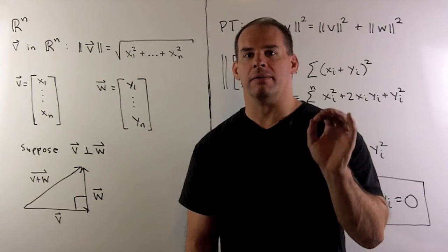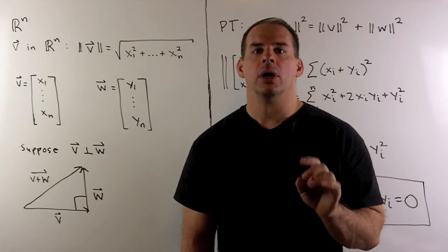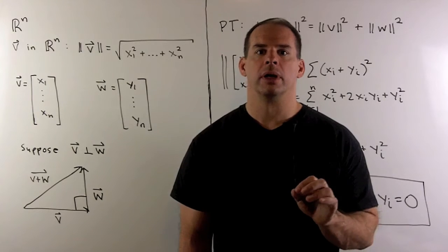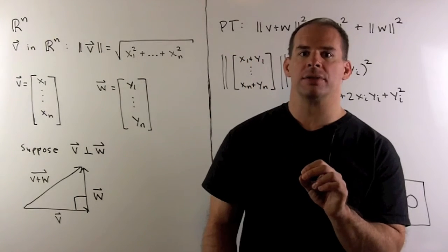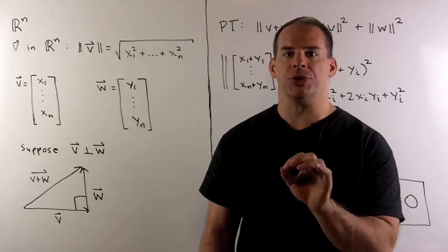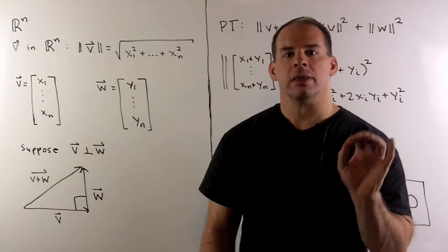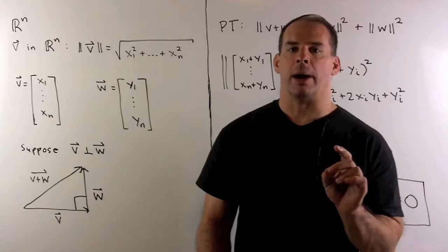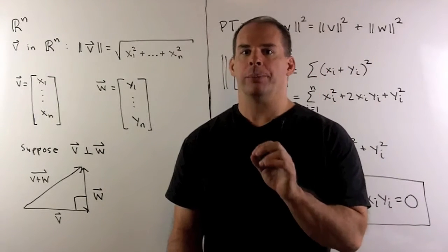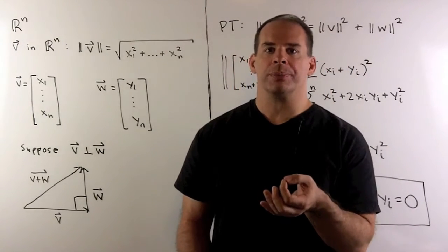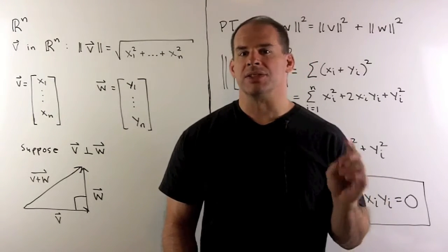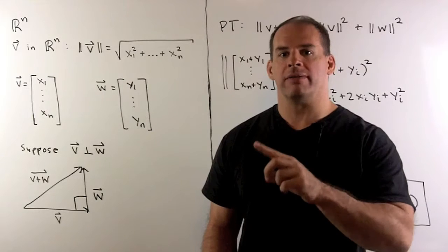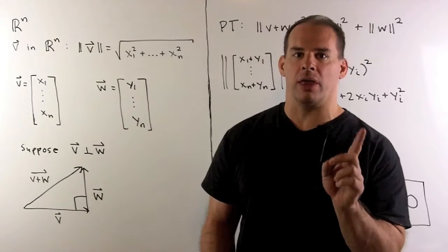With our definition of length of vectors in Rn, we can now define the standard inner product on Rn. If you've had multivariable calculus, when we're looking at R2 or R3, this inner product is just the dot product. What does an inner product do? It's a gadget that takes two vectors, returns a number — this number tells us how much one of the vectors is moving in the direction of the other vector.